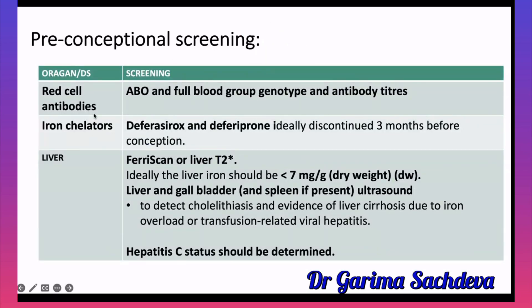You must also check for red cell autoantibodies — do an ABO blood group and full atypical antibody screen. Regarding iron chelators: these patients are at high risk of iron overload and are often on iron chelators. Deferasirox and deferiprone are not safe in pregnancy and must be discontinued at least three months prior to pregnancy.